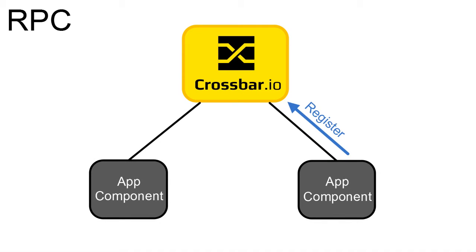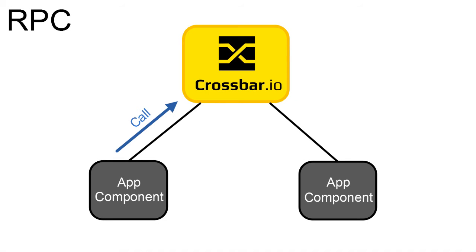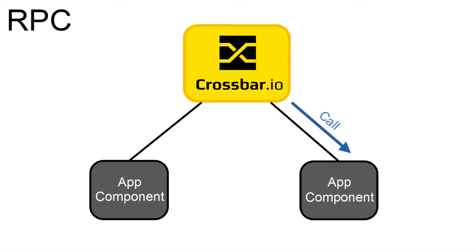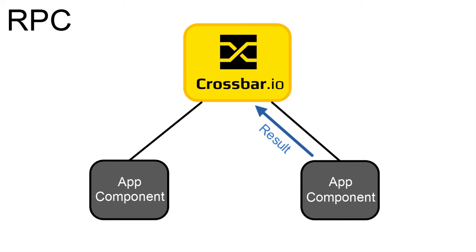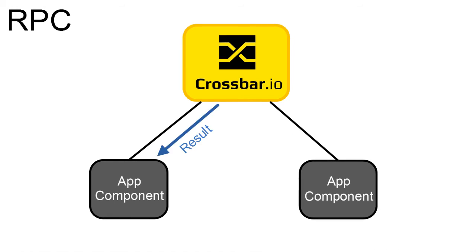With remote procedure calls, a component registers a procedure — for example, take picture — with Crossbar. Other components then call that procedure, making the call to Crossbar, and Crossbar forwards the call to the correct endpoint. Once the procedure is done, it returns the result, which in our case would be the image.